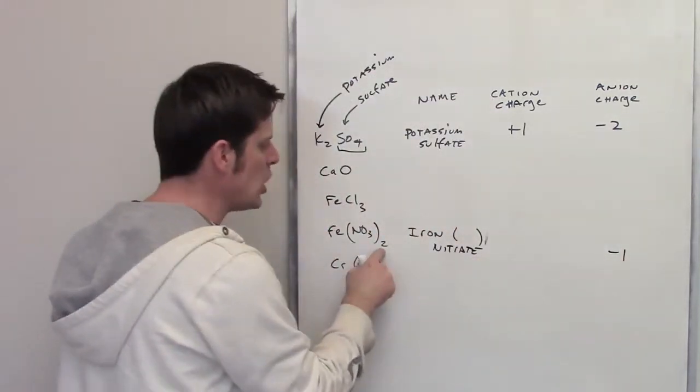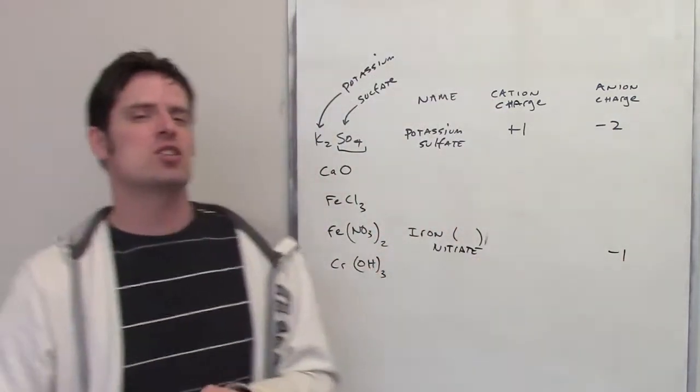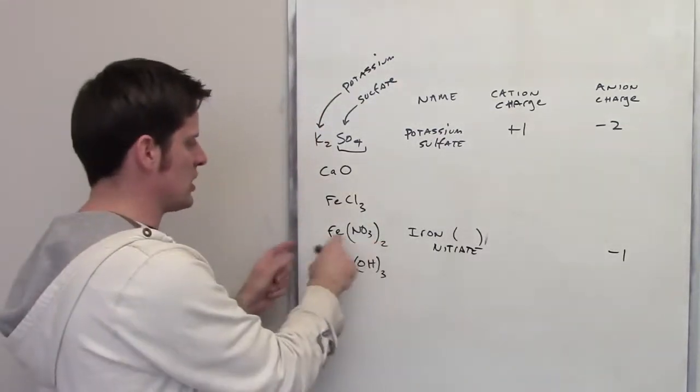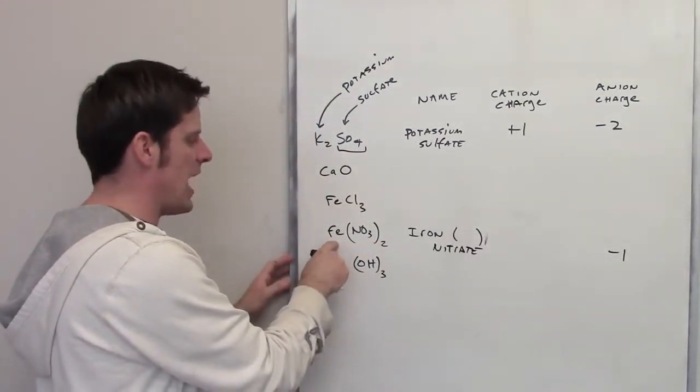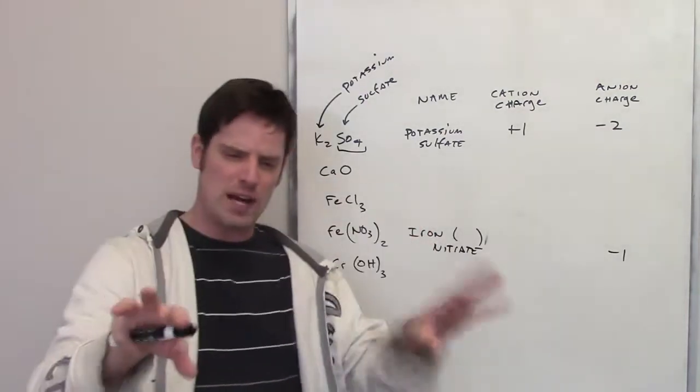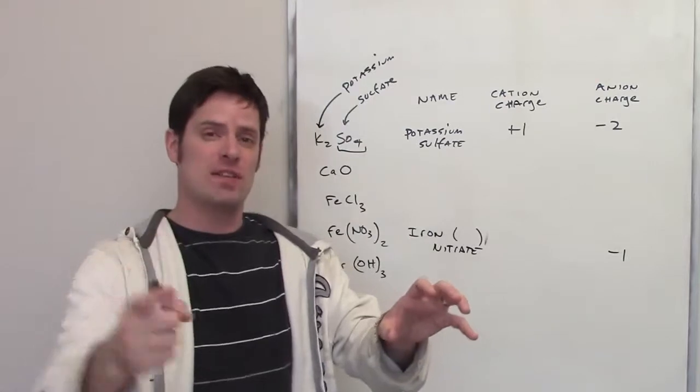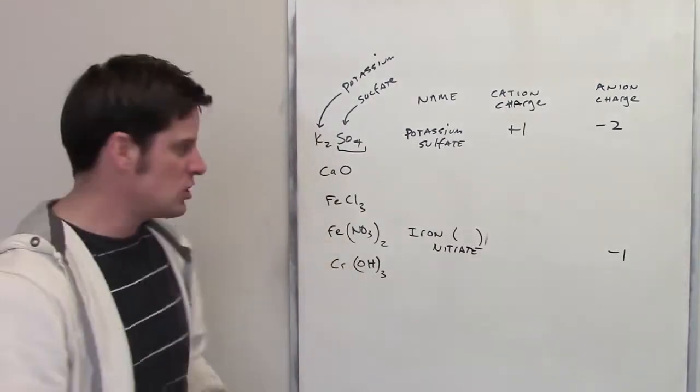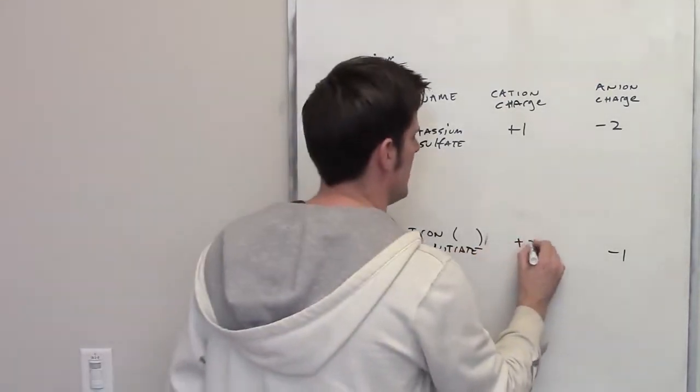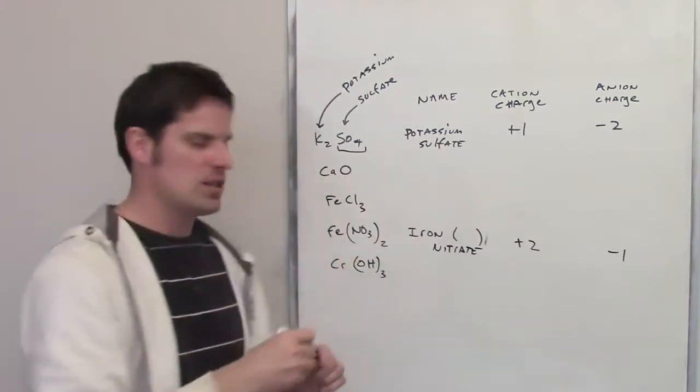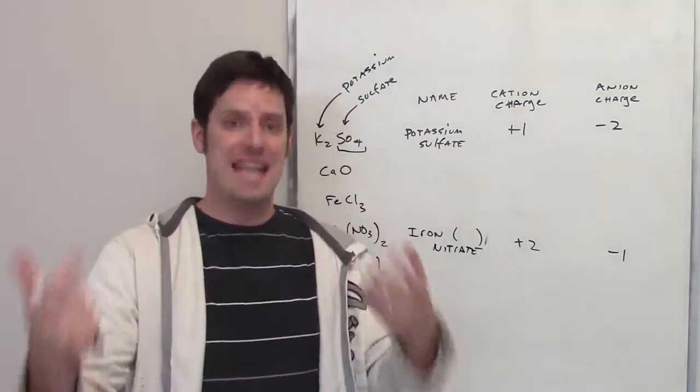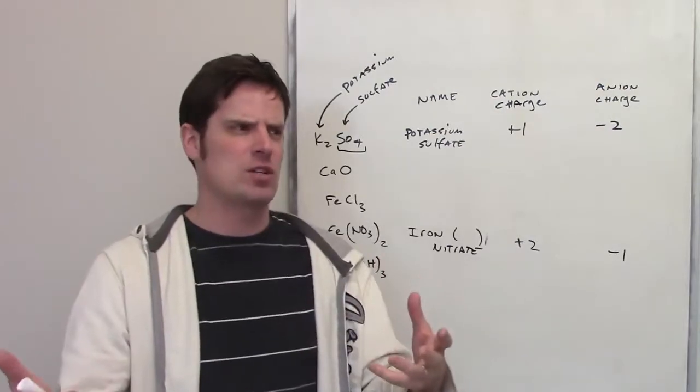You'll notice that there are two of them. Each of those nitrates has a charge of negative one, and there are two of them, each one stuck to a different side of this iron atom. So I've got iron stuck to two nitrates. Each one has a charge of negative one, which means that iron must have a charge of plus two, because it has to have a positive two charge to counterbalance the total negative two charge of two individual nitrates, each having a negative one charge.